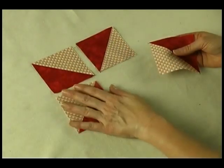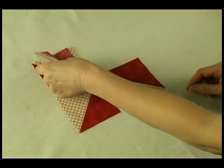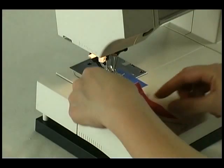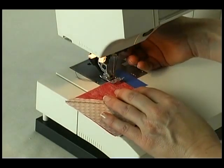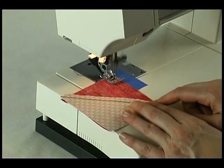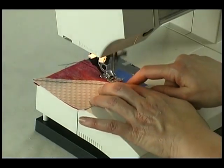Lay the half square triangles out to form a pinwheel. Using a one-quarter inch seam allowance, sew the top pair of half square triangles right sides together and press open. Repeat with the bottom pair of half square triangles.